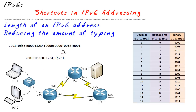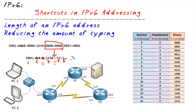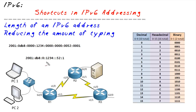One important note: we can only use the double colon once per IP address. If we used it in two places, the system would count five groups, know there are three more groups of zeros, but couldn't determine whether it's two here and one there, or one here and two there. It can't guess, so we use the double colon only one time, allowing the system to correctly fill in the blanks.